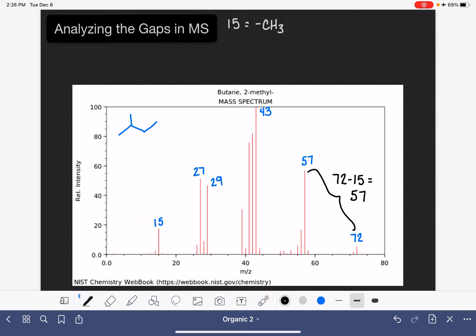Let's take a look at another gap. We have another gap right here, 43 minus 57, other way around 57 minus 43. That corresponds to 14. That looks like that could be due to the loss of a CH2. So if we have a gap of 14, that most likely corresponds to a CH2.